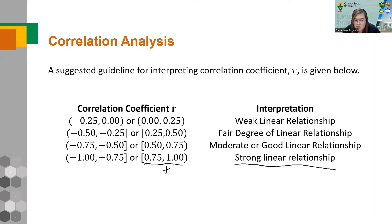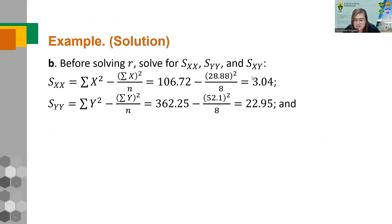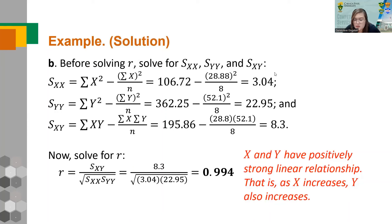Since r = 0.994 falls in the range 0.75 to 1, there is a positive strong linear relationship. The interpretation is: X and Y have a positively strong linear relationship, meaning as X increases, Y also increases.